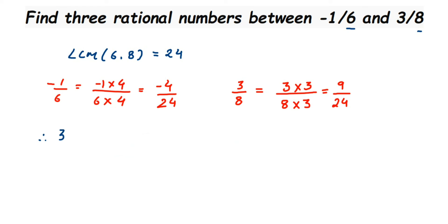Therefore, 3 rational numbers between minus 1 by 6 and 9 by 24 are: I'm gonna start with minus 3 by 24.